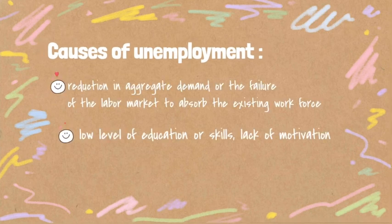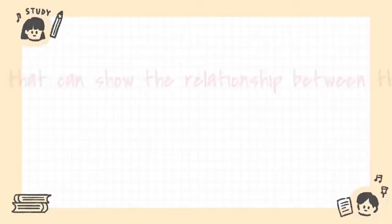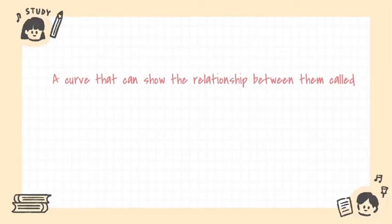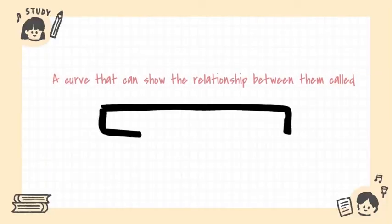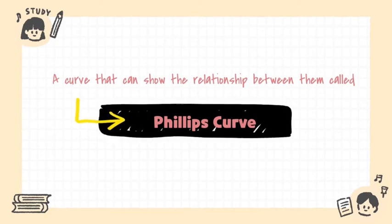Causes of unemployment: reduction in aggregate demand or the failure of the labor market to absorb the existing workforce, low level of educational skills, lack of motivation. A curve that can show the relationship between them is called the Phillips Curve. So Phillips Curve will be the main topic of this video.